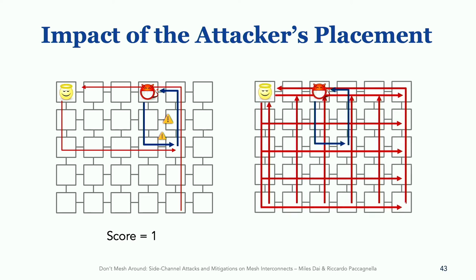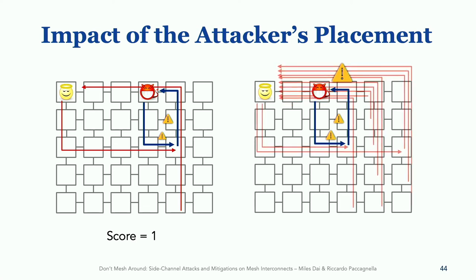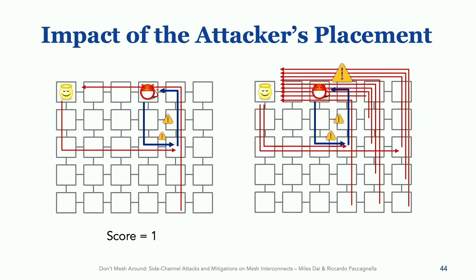However, if we shift the attacker left by just one core, due to the complexity of the mesh interconnect, this placement turns out to be a particularly good one. All the flows shown in the slide are actually observable by the attacker in this placement. In fact, this placement is one of the best on our processor — it achieves a score of 10. We also found that this placement works much, much better for mounting side-channel attacks against cryptographic code. More details are in the paper.